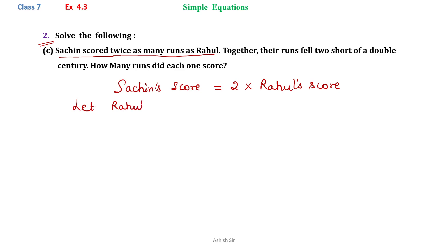Now we can assume that, let Rahul's score equal to x. Therefore Sachin's score will be 2 into x, which is 2x. Now the situation is given: together, together means the total of both the scores, their runs fell two short of a double century.